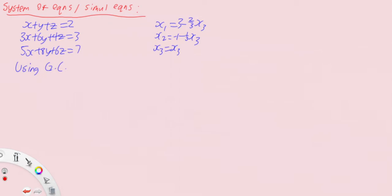Now what you'll notice is that all your answers now include x3. There's no definitive answer. You see x1 has minus 2 over 3x3, x2 equals minus 1 over 3x3, then finally x3 equals x3.